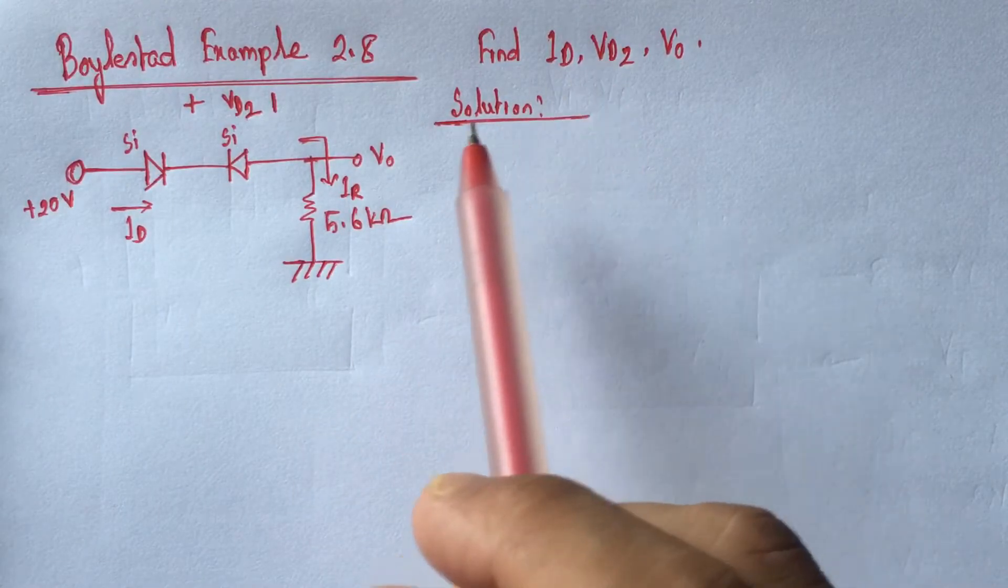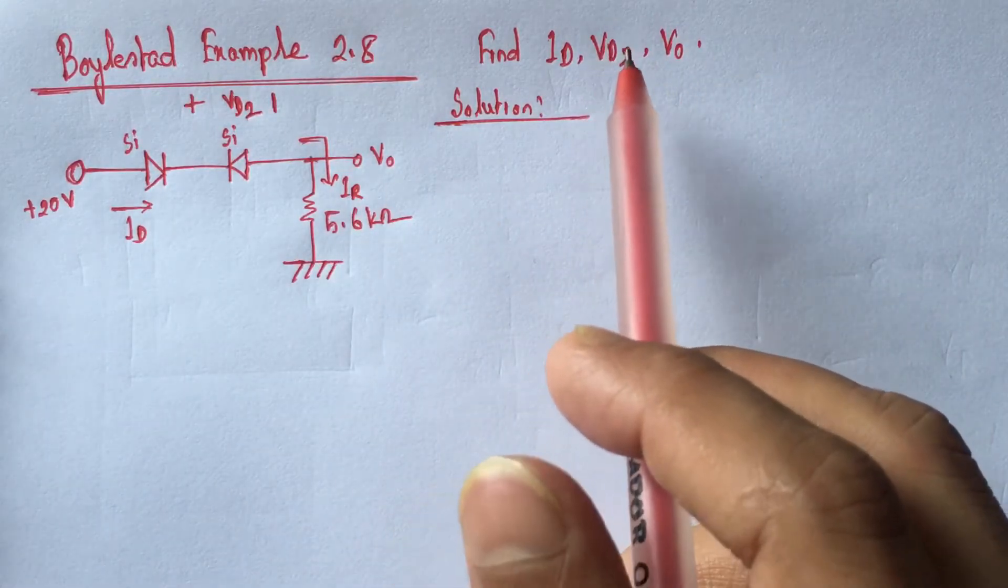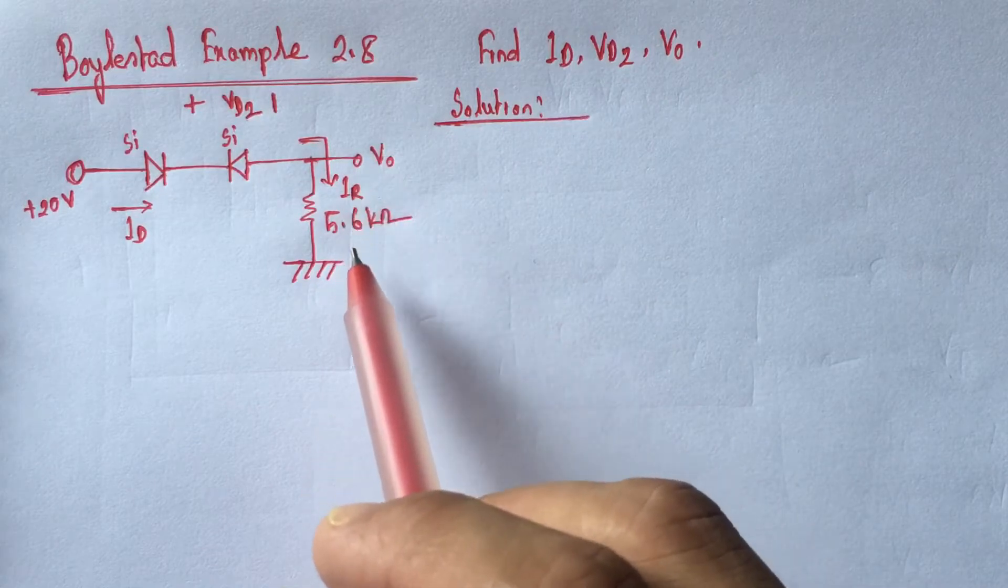Here we have to identify the current ID flowing through the diode and voltage VD2 of the silicon diode and the voltage V0 across this resistance.